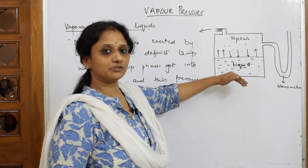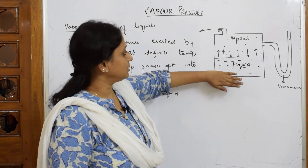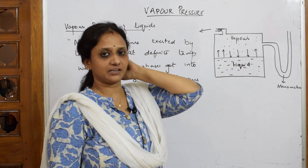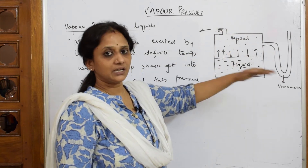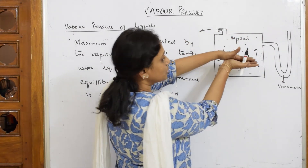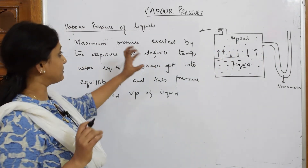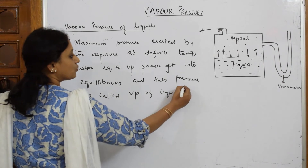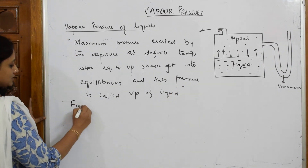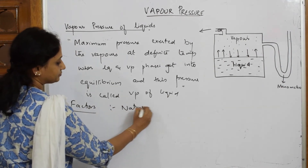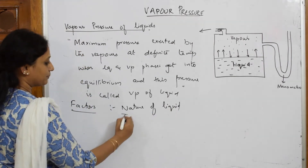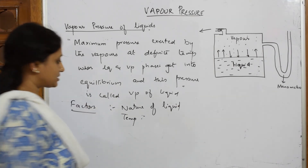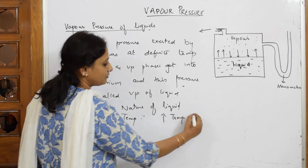Just by closing the container, because of collisions, the liquid starts converting into vapor state. Since the container is evacuated, it has only vapors of the liquid, and those vapors start exerting pressure on the surface of the liquid. At one particular point, the vapor and the liquid attain equilibrium — that maximum pressure at equilibrium is called vapor pressure. The factors on which vapor pressure depends are: first, the nature of the liquid; second, temperature. When temperature increases, vapor pressure also increases.